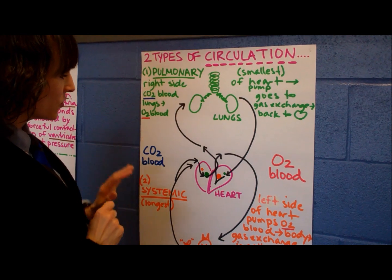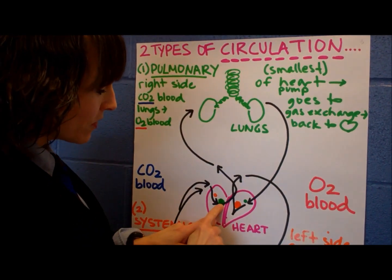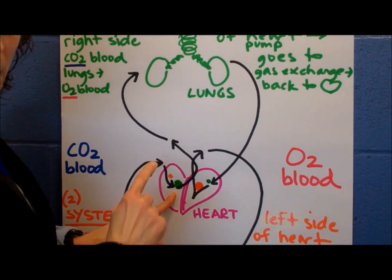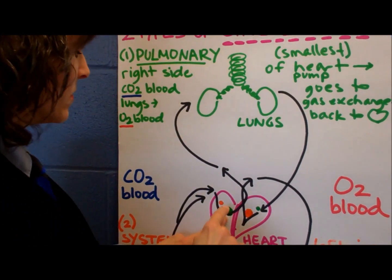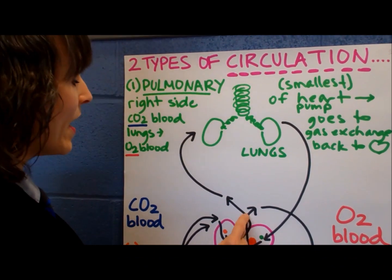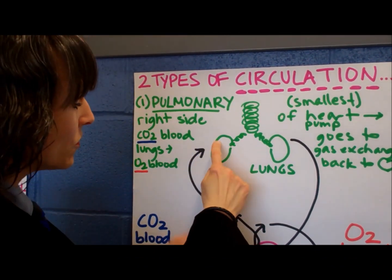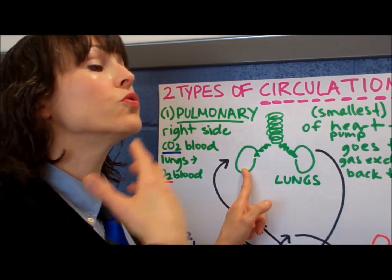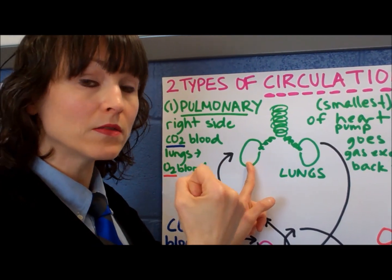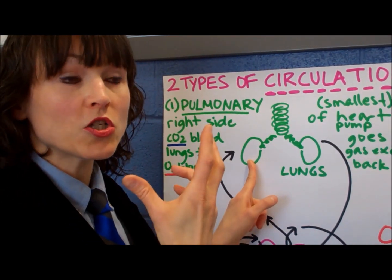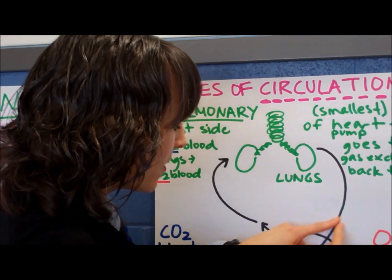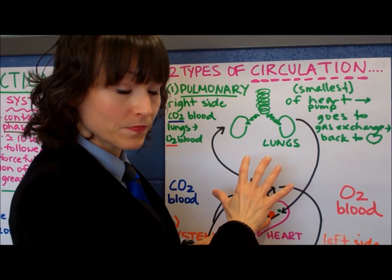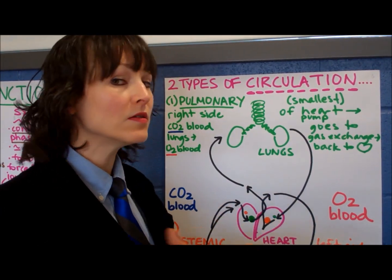Let's look at the pulmonary circulation first. We start at the big dot and end at the small green dot. The right side of the heart pumps the blood — remember, the ventricles pump. The blood is pumped out of the heart and goes to the lungs. At this point the blood is deoxygenated; you exhale CO2 and inhale oxygen. The oxygen eventually passes into the blood, which is then brought back to the heart. That loop is the pulmonary circulation.